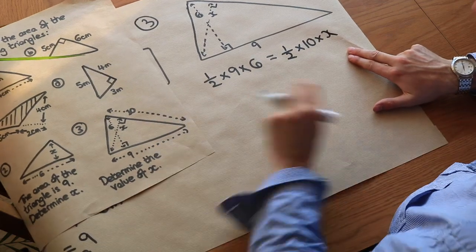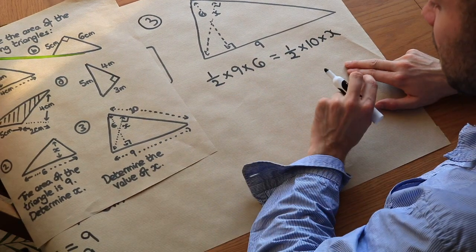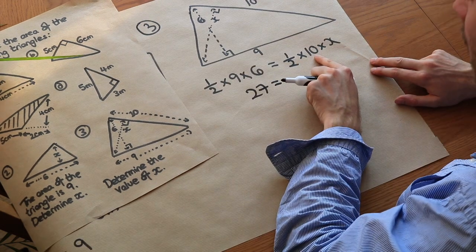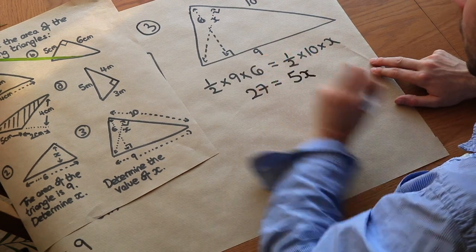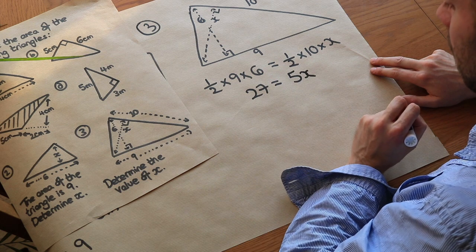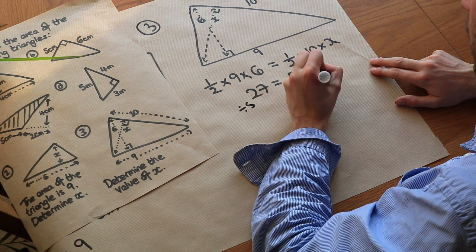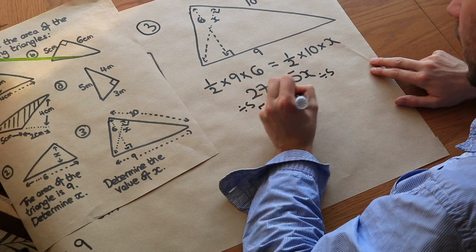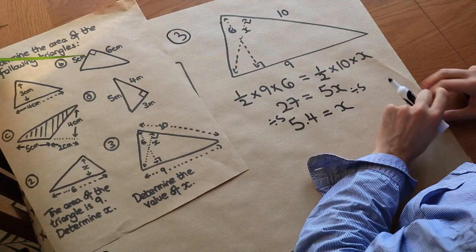Now we just have an equation to solve. Half times 9 times 6 is 27, and half times 10 times x is 5x. So 27 equals 5x. Dividing both sides by 5, we get x equals 5.4. That is the value of x.